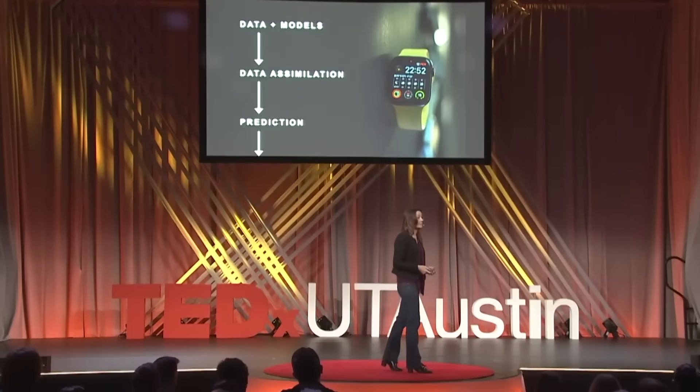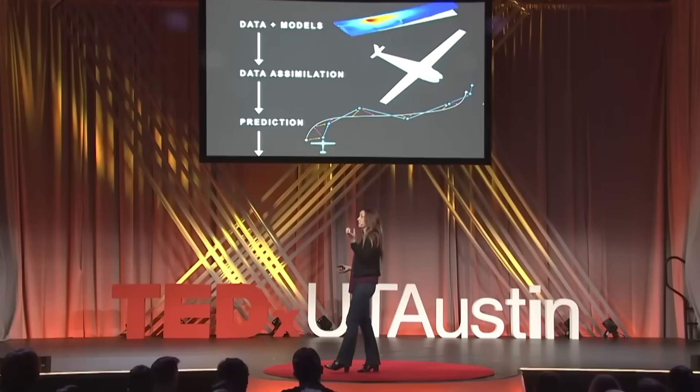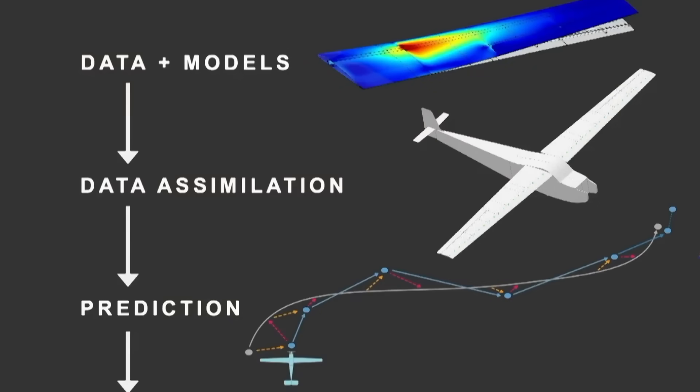But what you might not know is that a similar revolution has been taking place in engineering systems. The story is much the same. We have data, and we have increasing amounts of data as sensors have become smaller, lighter, cheaper, and more powerful. In engineering, we also have models — usually grounded in physics — that represent the governing laws of nature and let us predict how an engineering system will respond. What you see up here on this slide is a picture of the unmanned aircraft that I have in my research group.